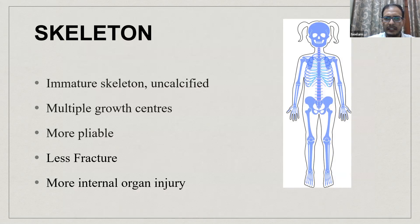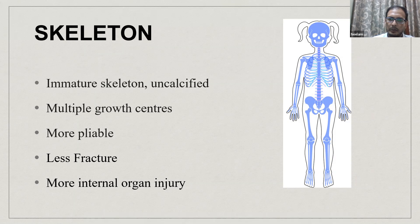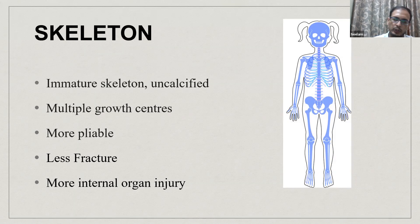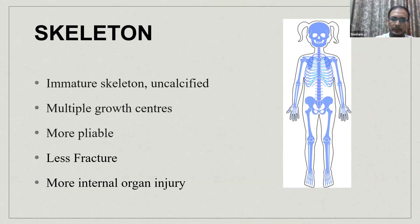The skeleton of a child is immature — mostly uncalcified, with multiple growth centers, and therefore more pliable. It tends to bend, resulting mostly in greenstick fractures or plastic deformities rather than frank fractures as in adults. This means more forces are transmitted to internal organs rather than absorbed by the skeleton, so there are more chances of internal organ injuries in pediatric polytrauma.